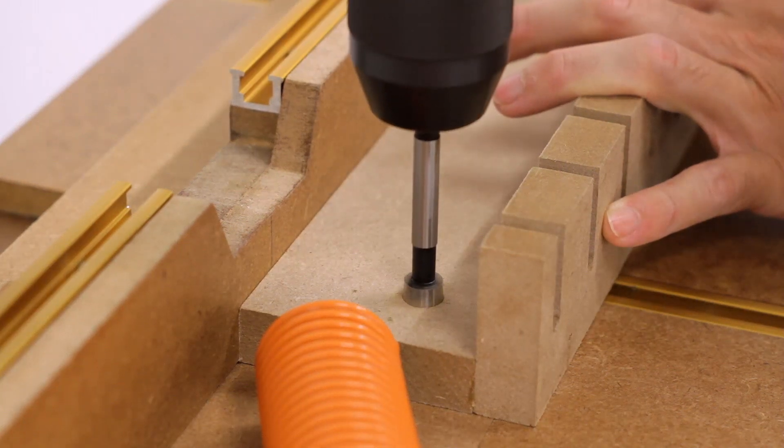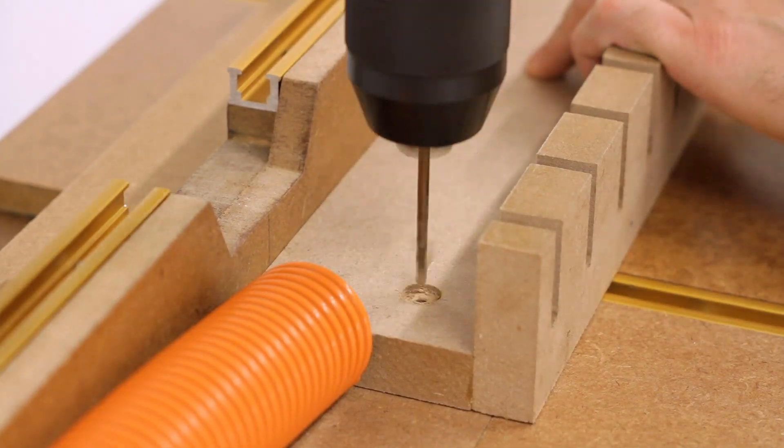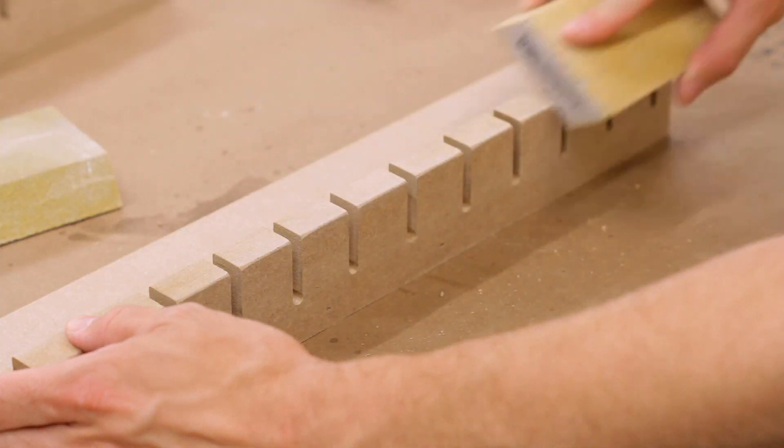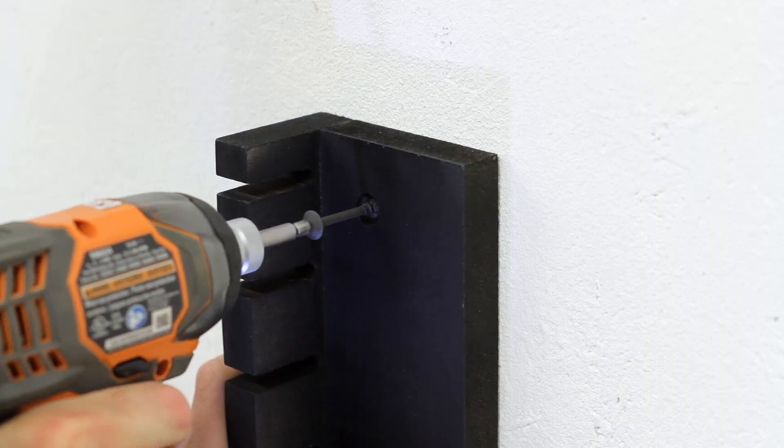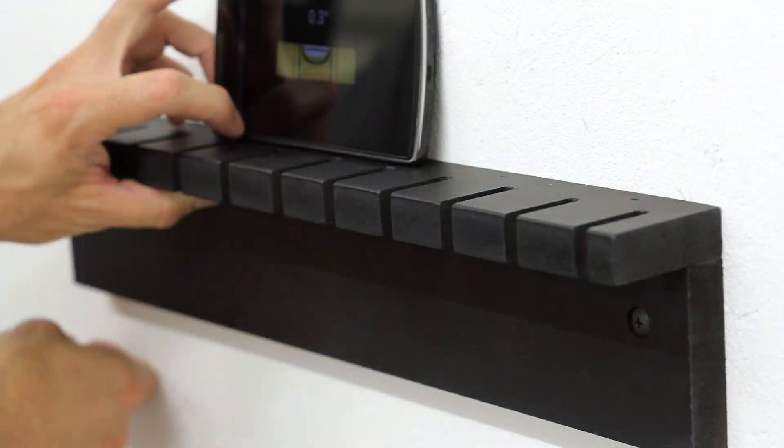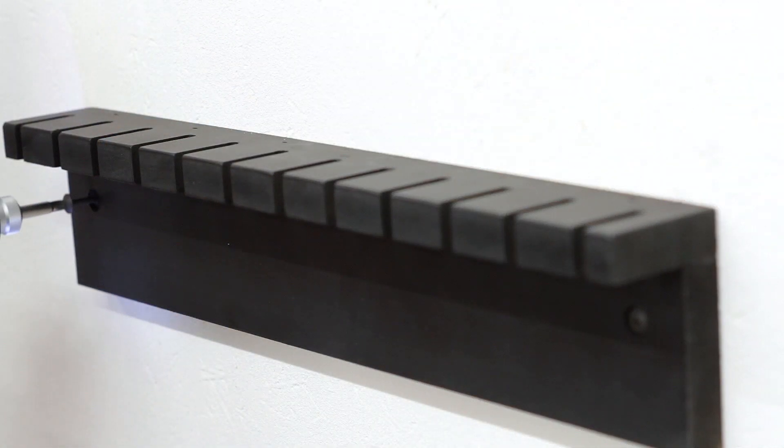I then countersunk and pre-drilled holes for the mounting screws and rounded over the front edges a bit with the sanding block. To finish the racks I used a couple of coats of spray paint and then mounted them to the wall with a pair of cabinet screws.